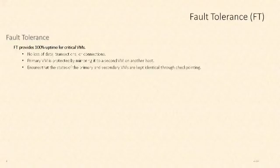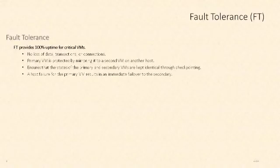This ensures that these two virtual machines are kept exactly identical through a mechanism called checkpointing. So if we have an ESXi host failure and the primary virtual machine fails, the secondary virtual machine will immediately take over, become the primary, and a new secondary will be spawned to re-protect that virtual machine.